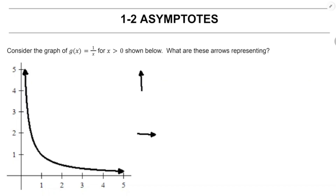You've been working with functions like this long enough that you know what it means. That arrow going up towards y equals 5 is showing you that the graph is going to continue increasing and somehow it's not going to cross that y-axis. We've seen this in Precal or Algebra 2. These arrows are getting at the idea of the asymptote.